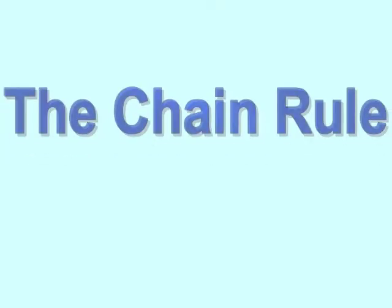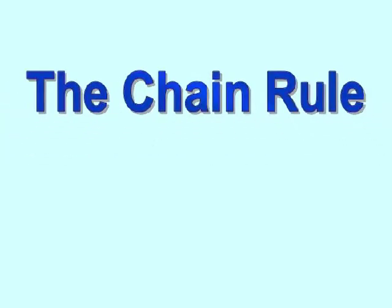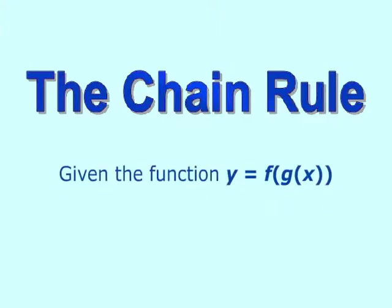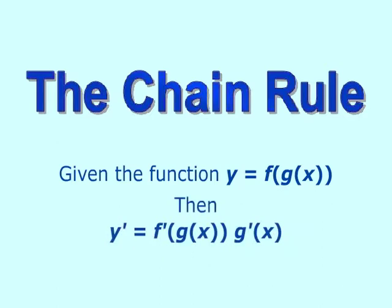This lesson is on the chain rule, or taking derivatives of composite functions. If we are given a composite function, which is y equals f of g of x, then the derivative, y prime, is f prime with g of x in there, times g prime of x.